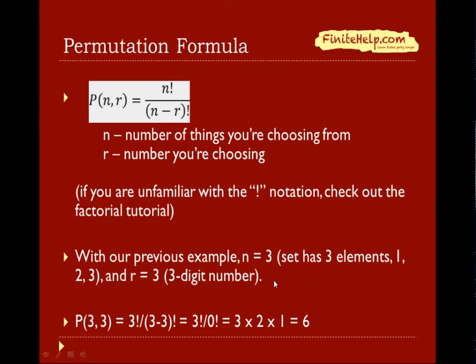So here, we simply have P(3, 3). So from there, it's just plug and chug. n is 3, r is 3, so we have 3 factorial divided by 0 factorial. So the answer is 6.